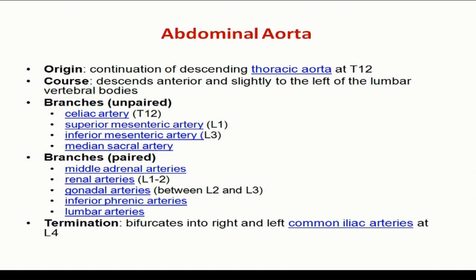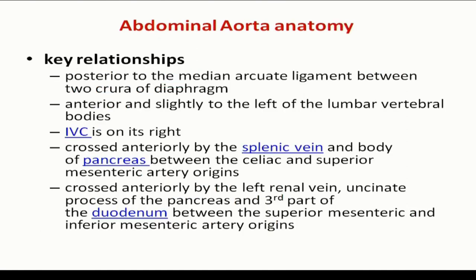The abdominal aorta starts at the level of T12 — always keep that in mind. Then its branches arise at T12, L1, and L3, with bifurcation at around L4.